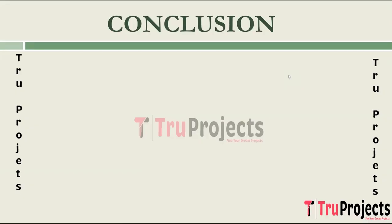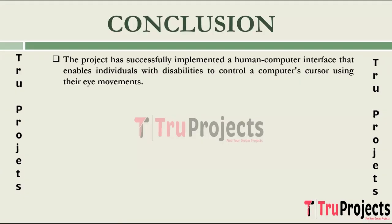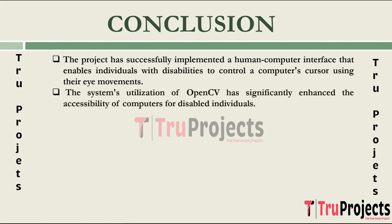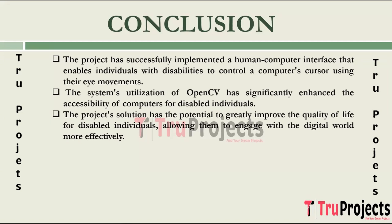Now I'm closing the webcam. Conclusion of the project: the project has achieved its primary goal by creating a system that allows people with disabilities to interact with computers effectively using their eye movements. This successful implementation means that individuals who may have limited or no use of their hands can still use computers independently. The project's use of advanced algorithms significantly improves how accessible computers are for individuals with disabilities, ensuring the system can accurately and reliably track a user's eye movements for effective cursor control.